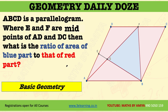There is a basic geometric question in front of you. Please pause the video and try to solve this question. I hope you have solved it — it is very basic. It contains one of the easiest questions of geometry daily dose, but it has a basic geometric concept. We need to find the ratio of the area of the blue part to that of the red part, if ABCD is a parallelogram and E, N, F are the midpoints of respective sides.